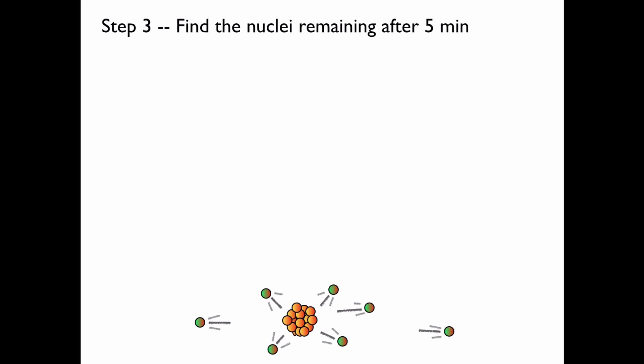Now we prepare to find the number of nuclei remaining after five minutes. Once again, we start with this expression. And now we can plug in the initial number of nuclei, which we found. We can plug in the decay rate, lambda. And for the time, we have five minutes. There's 60 seconds in a minute, so this is five times 60 seconds. And we obtain the number of nuclei.